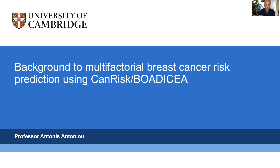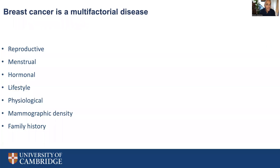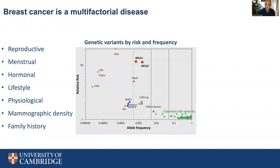Cancer risk and the underlying Bodicea model can be used to predict the risks of both breast and ovarian cancer, but here I'm focusing mainly on the breast cancer component. We now know from genetic and epidemiological studies that several factors are associated with the risk of developing breast cancer. These include reproductive, menstrual, hormonal, lifestyle, and physiological factors, but also mammographic density and family history of cancer in close relatives. There have also been several breast cancer genetic susceptibility variants identified.